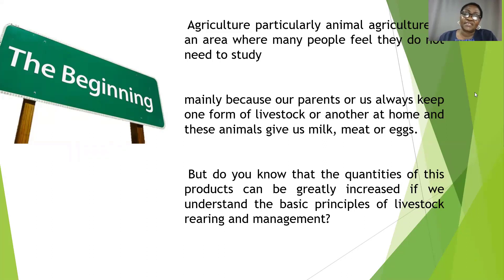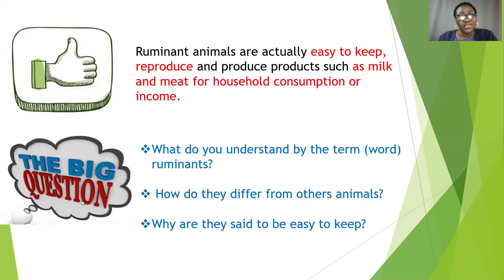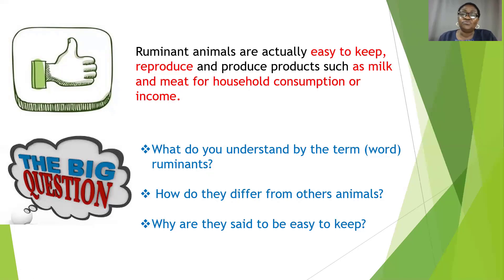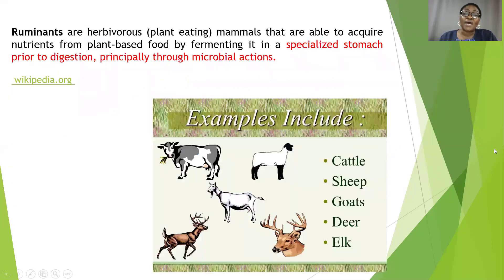Ruminant animals are actually easy to keep — they reproduce easily as we see around our households — and they give us products such as meat for household consumption or for income. They meet the nutritional needs of the house as well as providing economic value. But the big question most people ask is: what are these animals referred to as ruminants, what does the word ruminant mean, and how do they differ from other animals?